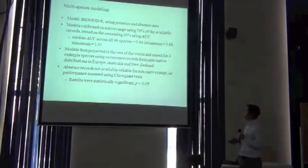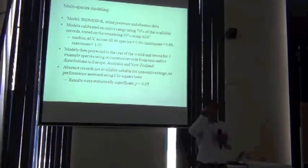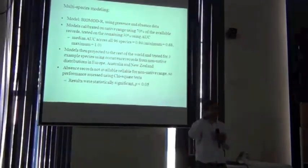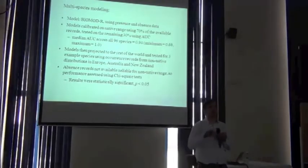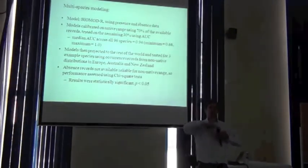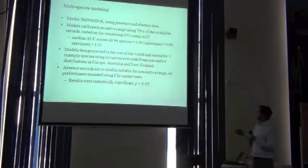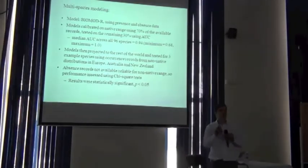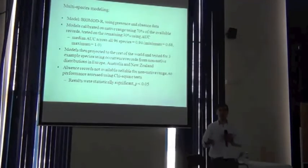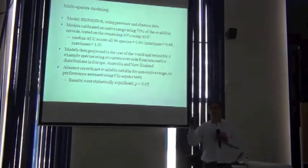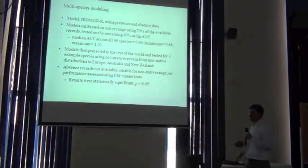They then projected the models to the rest of the world. They calibrated to South Africa as their study region - that's where they drew their box to pull out data to calibrate the models - and then projected it across the whole of the rest of the world. They obtained current records from a number of regions where those species were becoming invasive, so they could get some real independent test data from Europe, Australia, and New Zealand to test whether these predictions were useful.